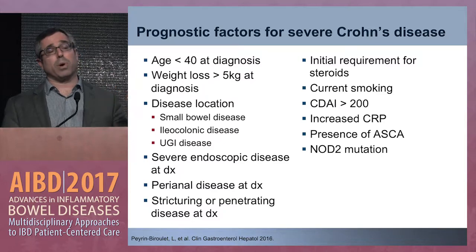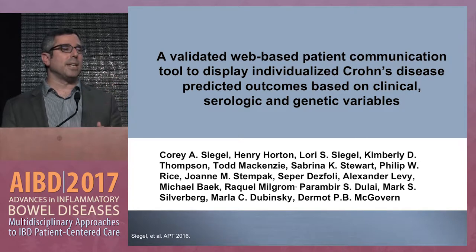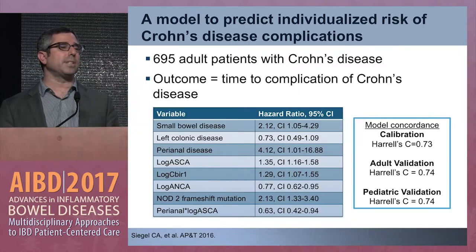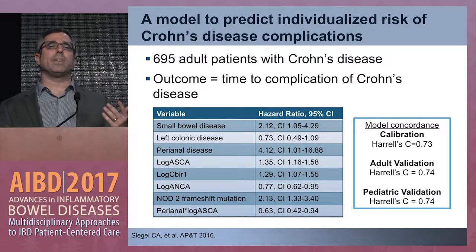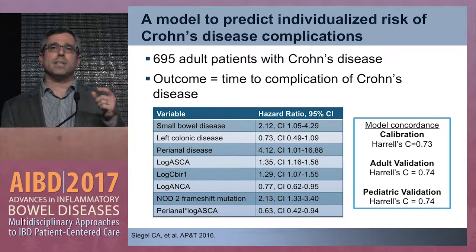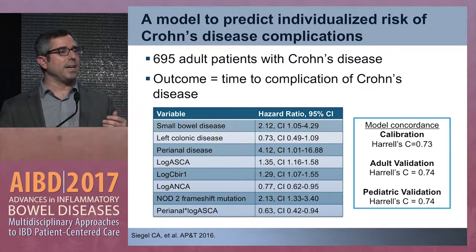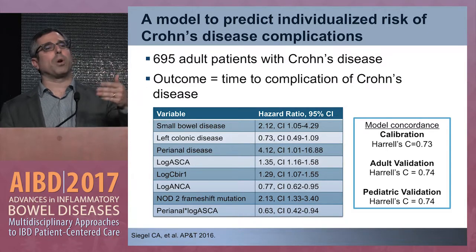Our goal in this project — which we've been working on for about ten years — was to develop a model that takes a patient who hasn't had a complication yet and risk stratifies them as low, medium, or high risk of developing a complication within the next three years. We had a large group with multiple patient cohorts to validate in. The model started with about 700 patients with Crohn's disease, looking at factors that contributed to complications over time — defined as internal penetrating disease, stricturing disease, or intra-abdominal surgery.